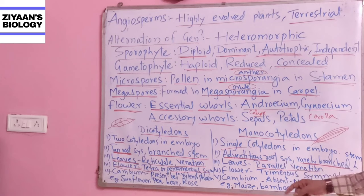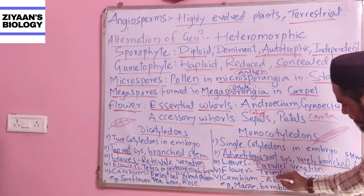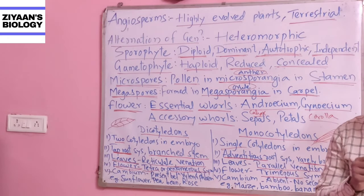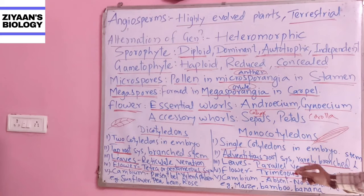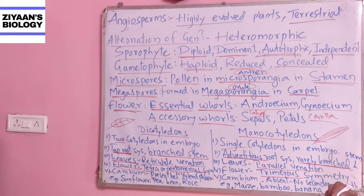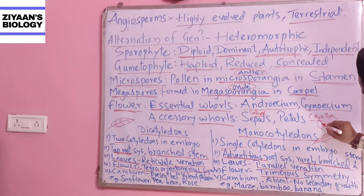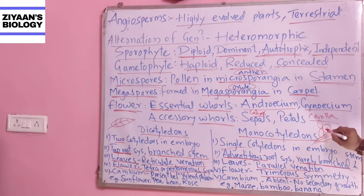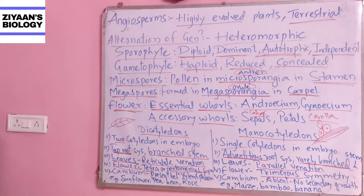If the flower can only be cut into trimerous symmetry — that is, three identical pieces — then it belongs to the monocotyledon class.